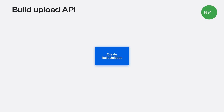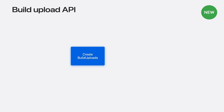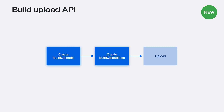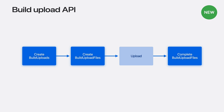To upload your build using the new API, start with creating build uploads. Build uploads contain build information such as version and target platform. Next, provide App Store Connect with the details of your build file using the build upload files — App Store Connect will then provide instructions on how to upload your build. Then upload your build binary following those instructions. The final step is to let App Store Connect know that the upload is complete, so it can start processing the new build.